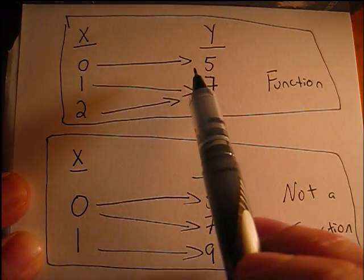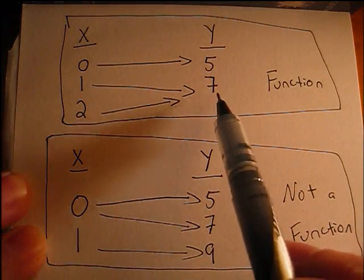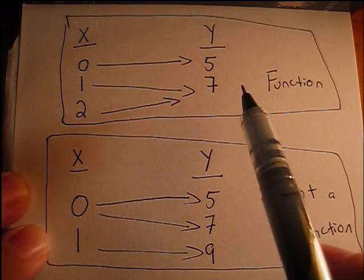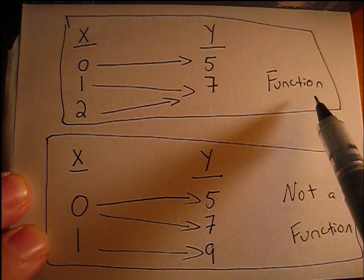We see that 0 is sent to 5, and 1 and 2 are both sent to 7. That is acceptable for a group or a mapping to be a function.